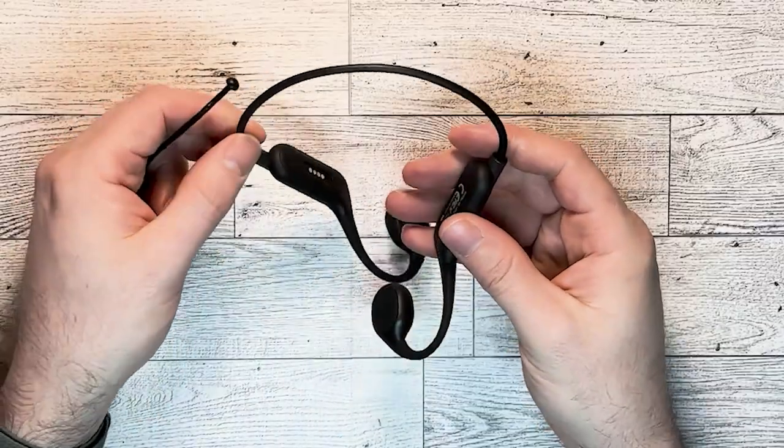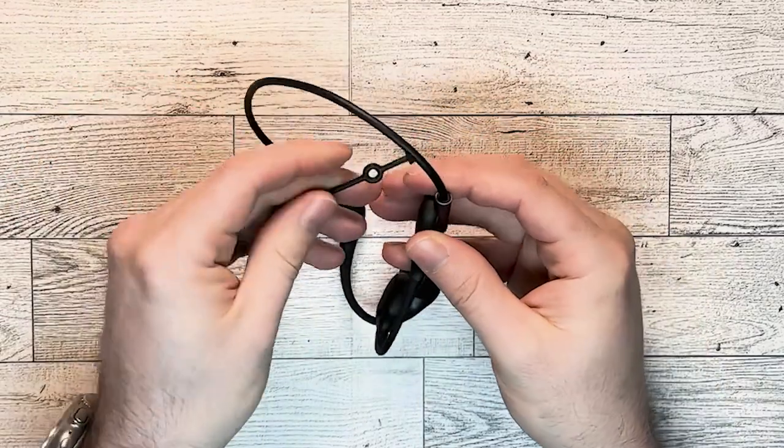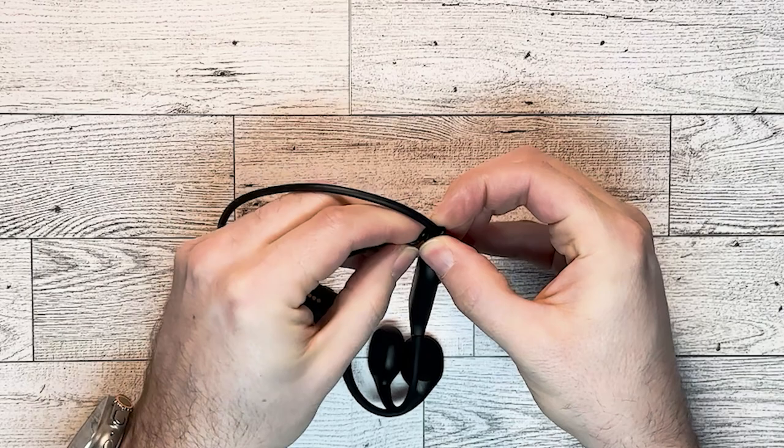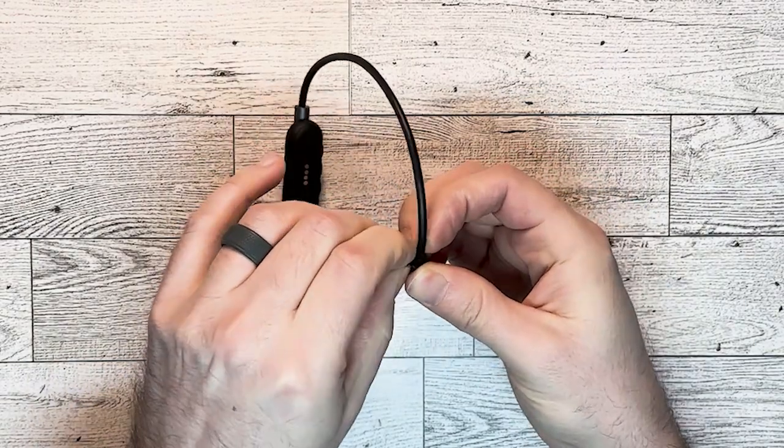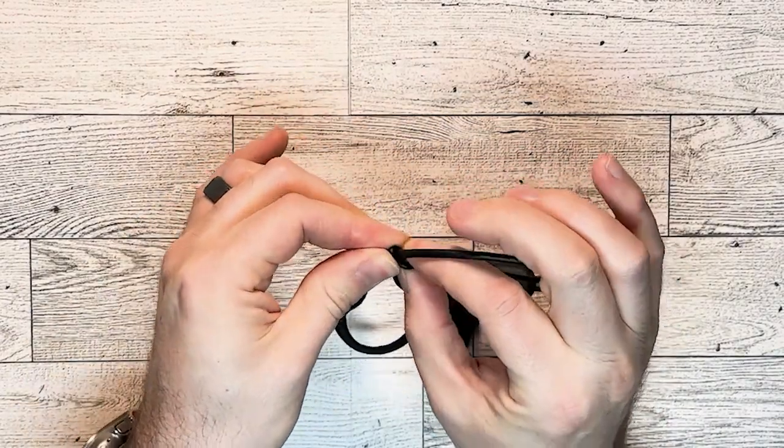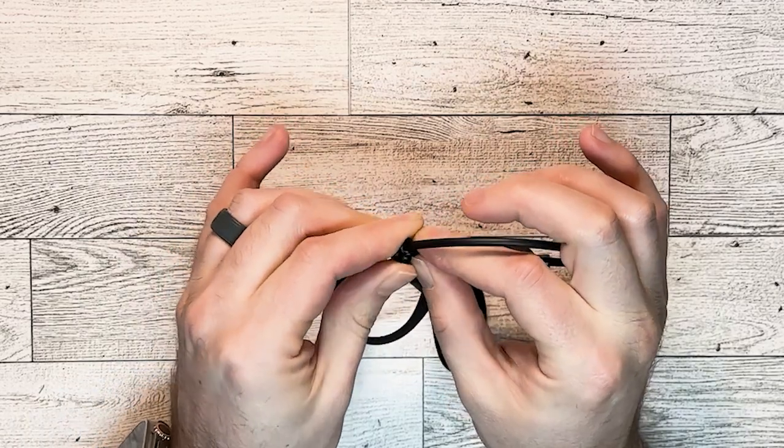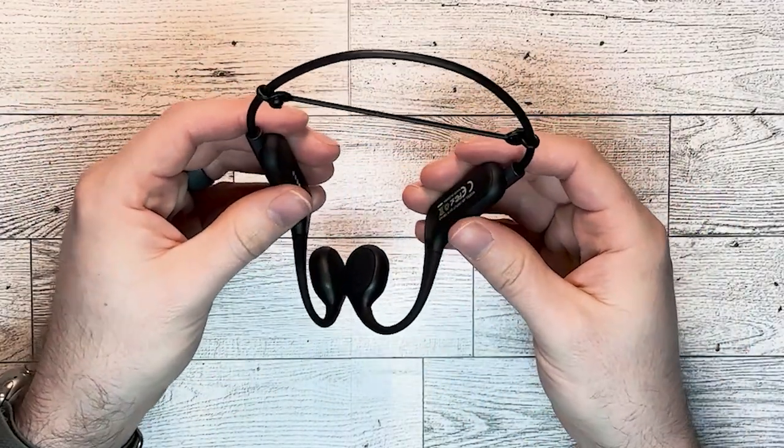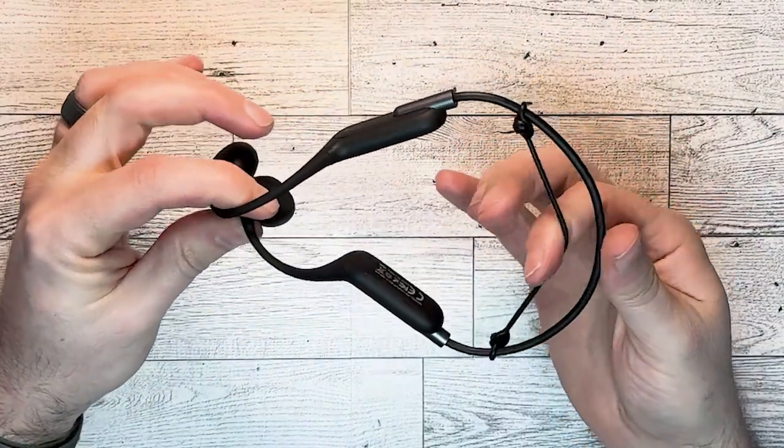To help ensure that your headphones stay on your head, it comes with this little elastic strap. You just wrap it around the wire portion of the headphones so that you don't have to worry about it falling off while you're riding your bike or anything. It helps secure it.